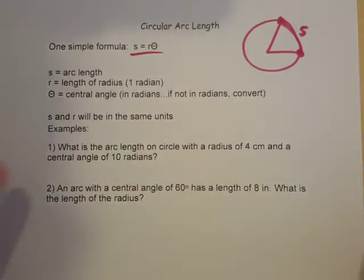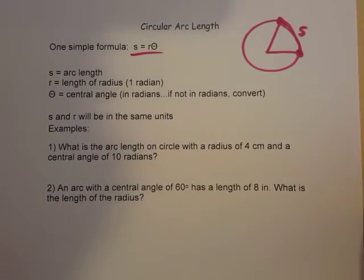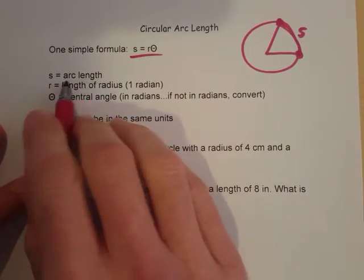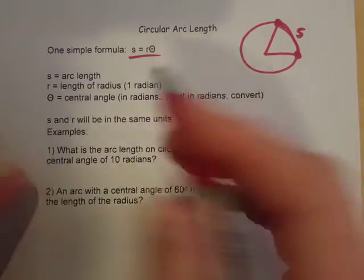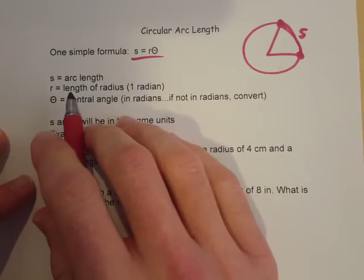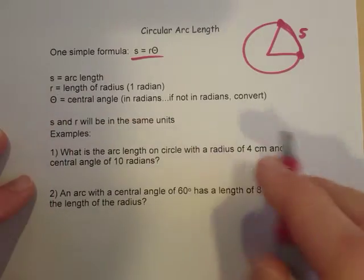Here's the formula: S equals R theta. Simple little formula. Some things that you need to know. First of all, S represents what we call arc length. Not sure why they used S for that, but that's always the variable that's used, so we're going to stick with it for consistency.